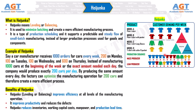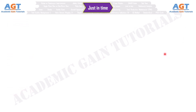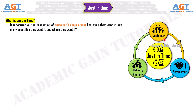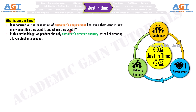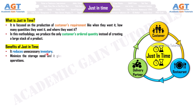Number 11: Just-in-Time. Just-in-Time is focused on producing customers' requirements — when they want it, how many quantities they want, and where they want it. In this methodology, we produce only the customer's ordered quantity instead of creating a large stock. Benefits: It reduces unnecessary inventory, minimizes storage needs, gives companies flexibility in manufacturing operations, and saves unnecessary expenses.